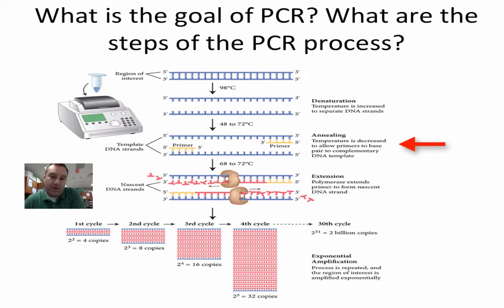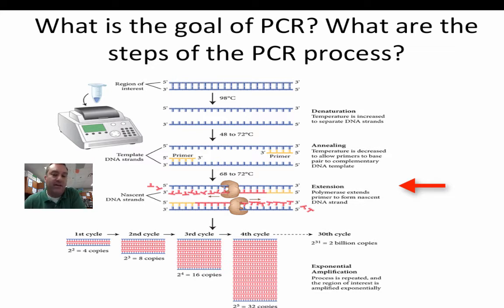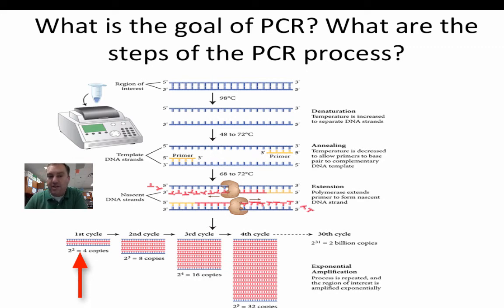We use a DNA polymerase called Taq polymerase, which comes from a bacteria that lives in hot springs, making it very stable at high temperatures. We heat the DNA back up to around 70 degrees Celsius and perform the extension step, where Taq polymerase makes the complementary strand of DNA, doubling your copies. As you go through each cycle, you're doing exponential growth — doubling, doubling, and doubling again.